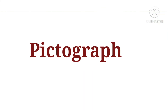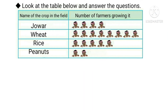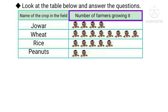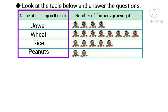Pictograph. Look at the table below and answer the questions. The information given in this table is the name of the crop in the field and the number of farmers growing it. The crops given are jowar, wheat, rice and peanuts. Now look at the first question.